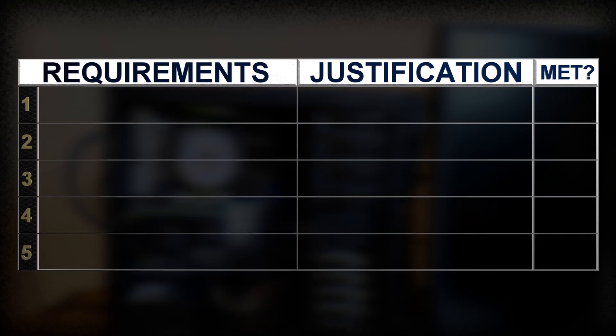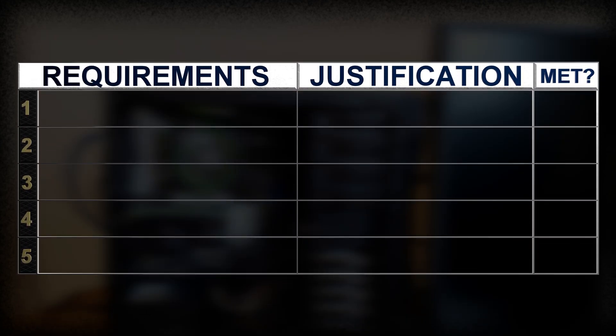Let's think about what we want in a storage device for personal and YouTube video data. The requirements are features or functionalities that the product — in this case a large storage device — must have, or else the product would not be useful. As you can see in this table, I have a column for the requirement, the justification of the requirement, and a met column. The met column will be used at the end to confirm that the product we've designed or purchased has met our requirements.